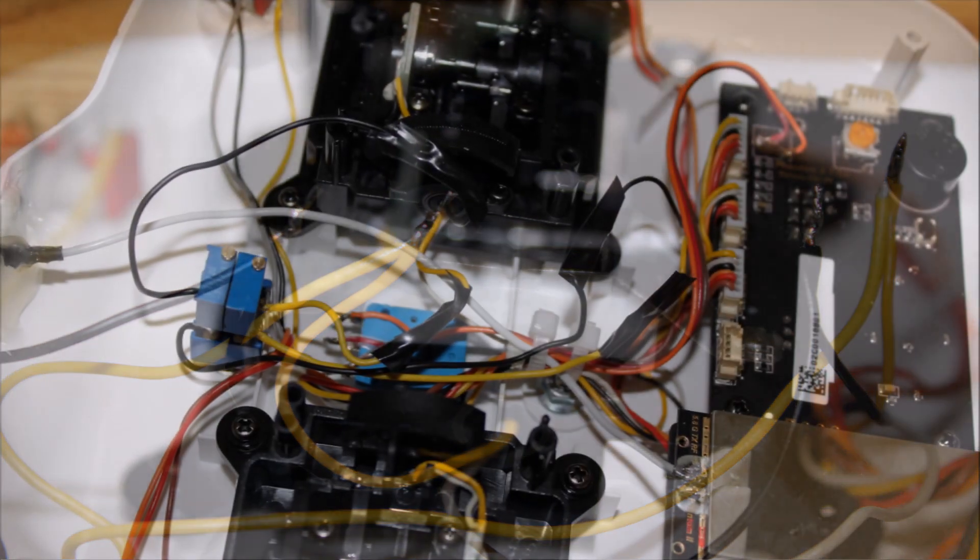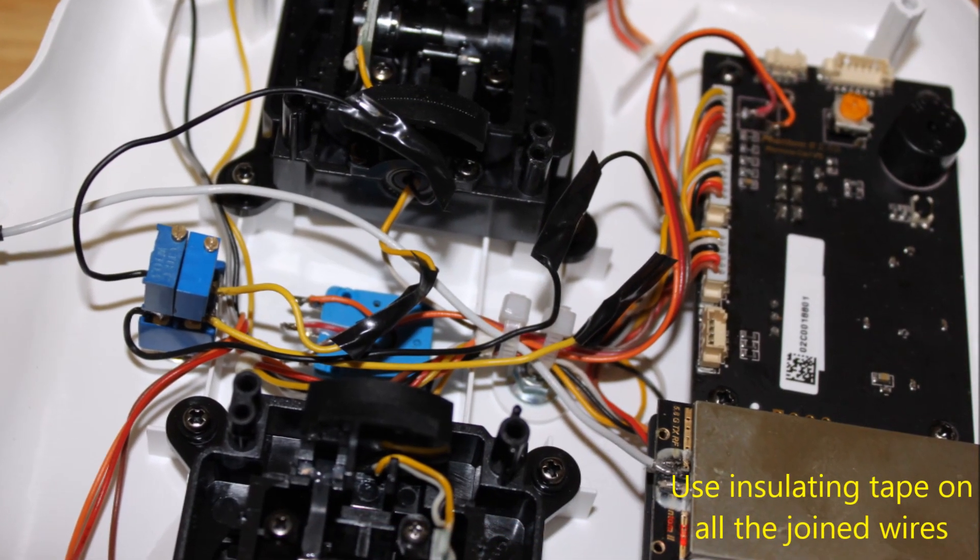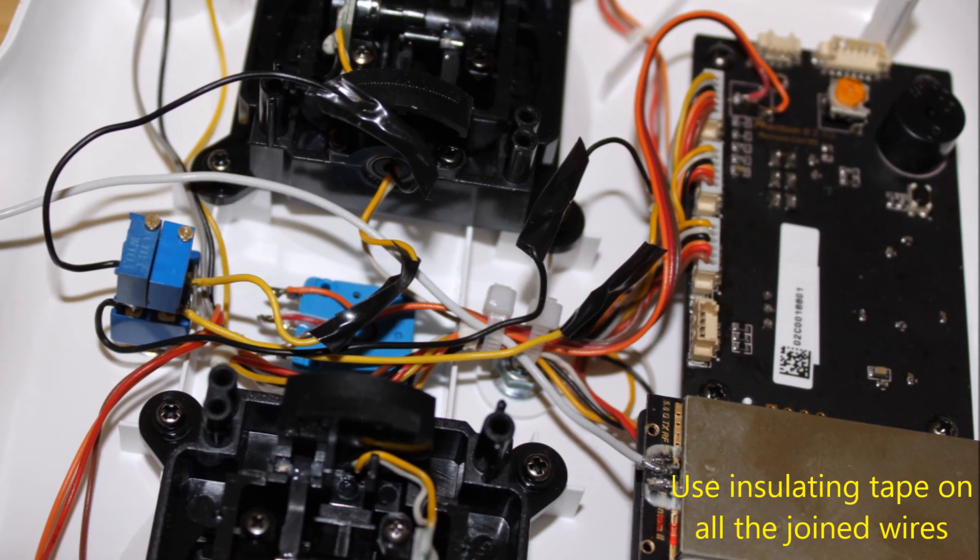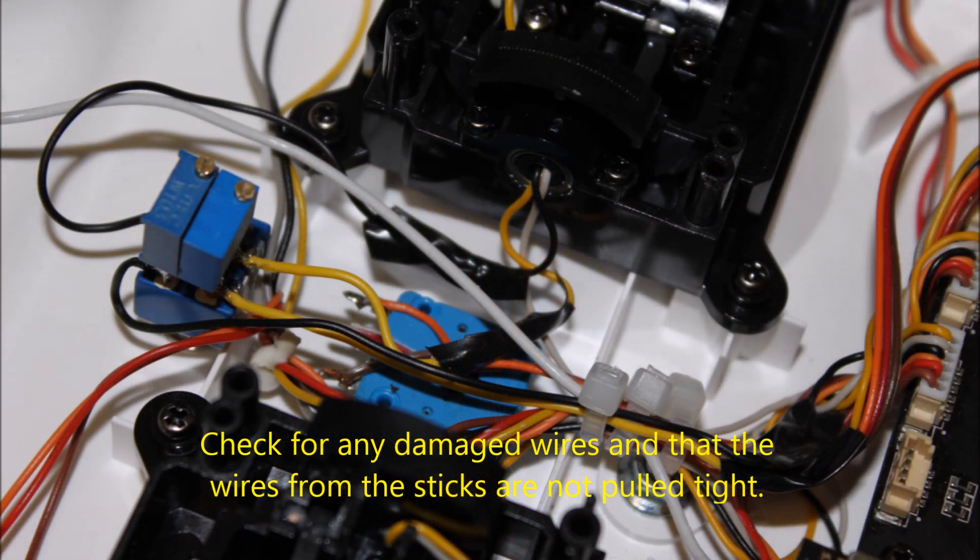When completed use heat shrink or insulating tape on all jointed wires to prevent shorts. Check for any shorts or damaged wires and that the wires from the sticks are not pulled too tight. Secure all wiring.